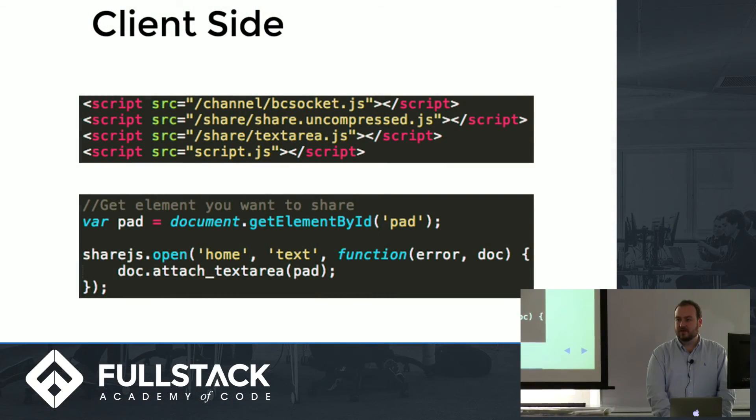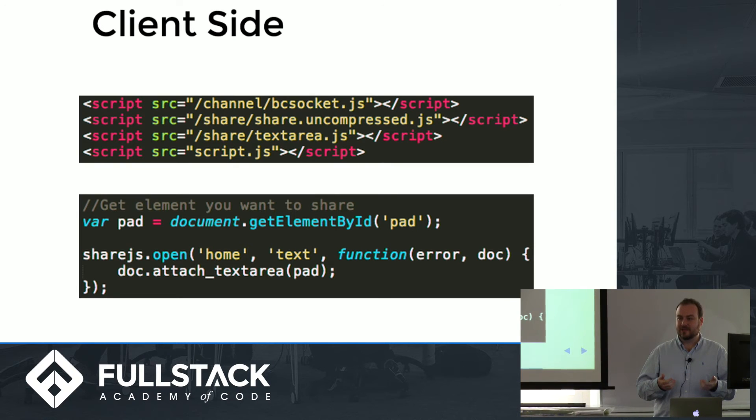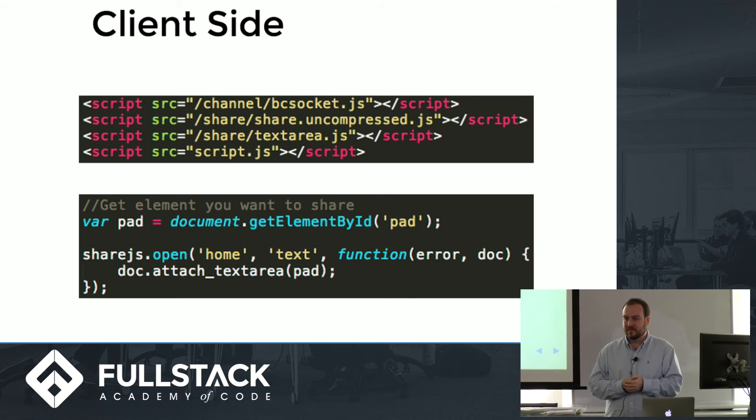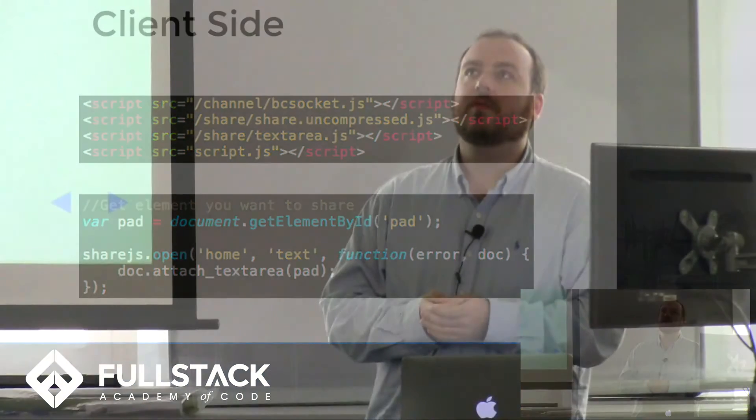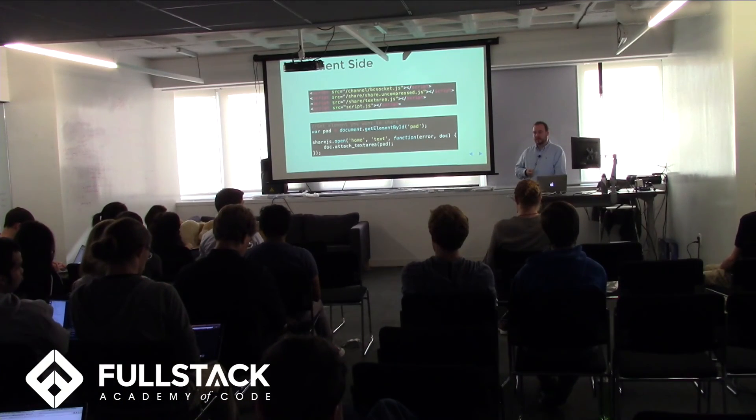It's pretty much the same as sockets, except for the base setup, this is all you have to do. It makes a lot of assumptions about how you're sharing unless you specify otherwise — so you don't need to define how to render it, because the logic for how it shares is already there. If you wanted to share something like buttons, the easiest way would be to share text and then change that text whenever you click a button. ShareJS shares an element and broadcasts the changes of what's happening — it doesn't broadcast the entire element.